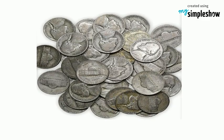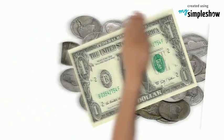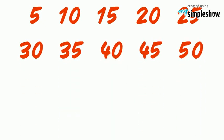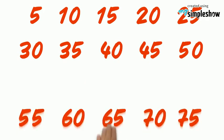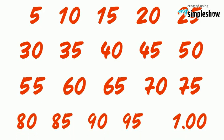Let's practice counting by five until we reach a dollar. 5, 10, 15, 20, 25, 30, 35, 40, 45, 50, 55, 60, 65, 70, 75, 80, 85, 90, 95, $1.